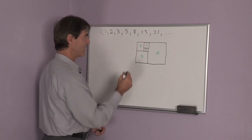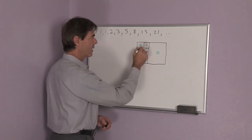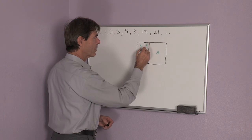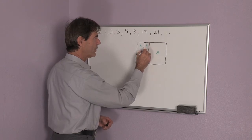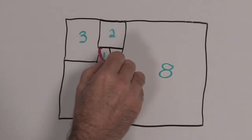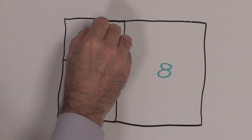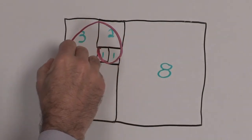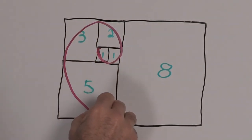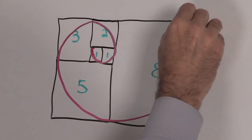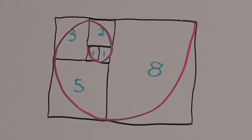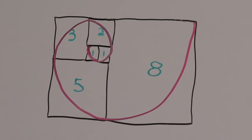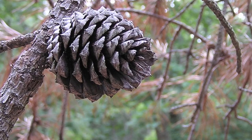The interesting thing about this is if I now connect the opposite corners of these squares to a curved line, I get a spiral and this spiral is very close to the so-called golden spiral which you will see in nature.